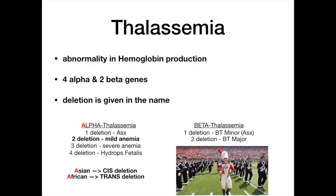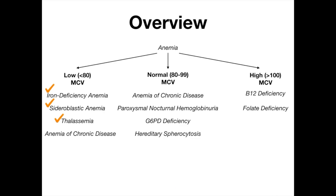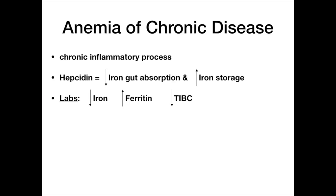Memory trick for alpha thalassemia: it's all the A's — Asian and African patients with the alpha gene deletions. Beta thalassemia major looks like the drum major. Extramedullary hematopoiesis means hematopoiesis occurring outside the medullary portion of bone, occurring on the skull and face, causing chipmunk facies. That's thalassemia — go through it a couple of times because it's particularly high yield. Moving on to anemia of chronic disease.